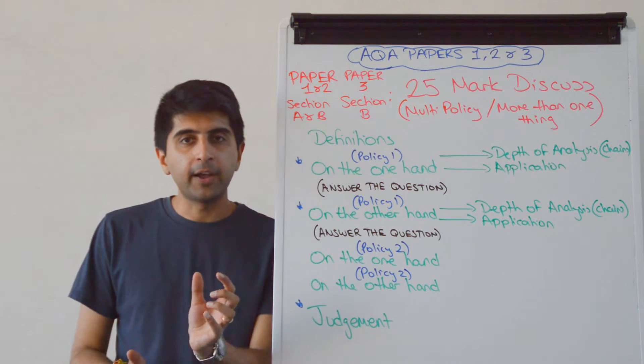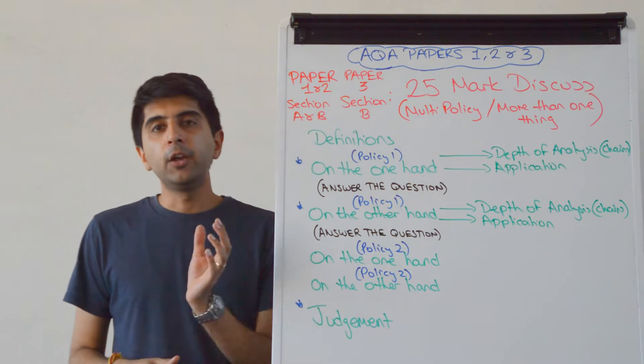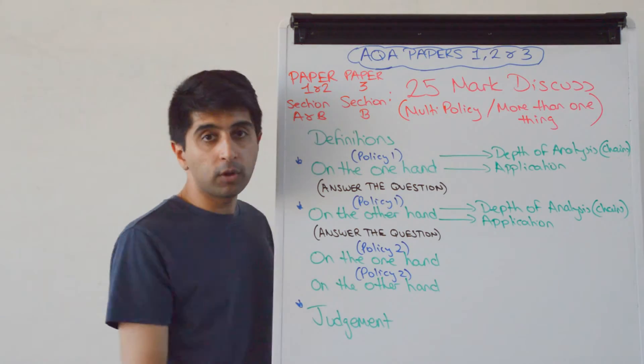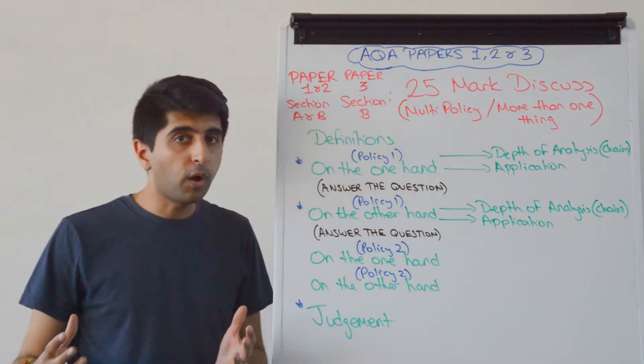Hi everybody. A more difficult 25 marker that can come in either paper 1, paper 2, or paper 3 is when you've got to discuss more than one policy, so a multi-policy question.